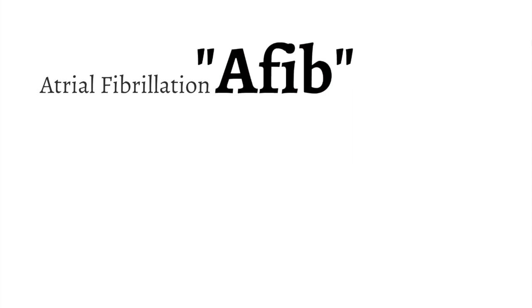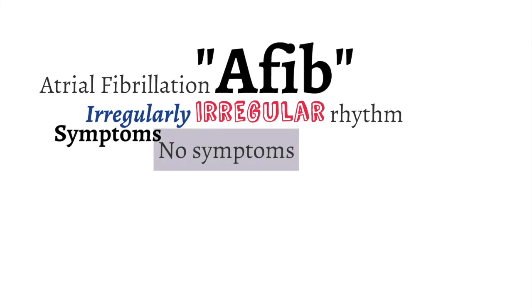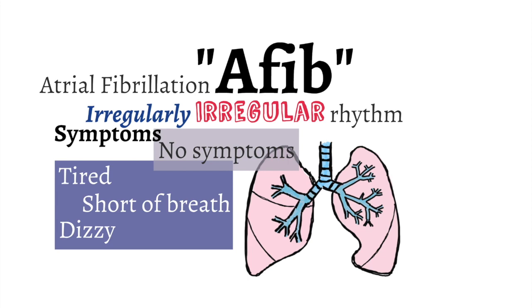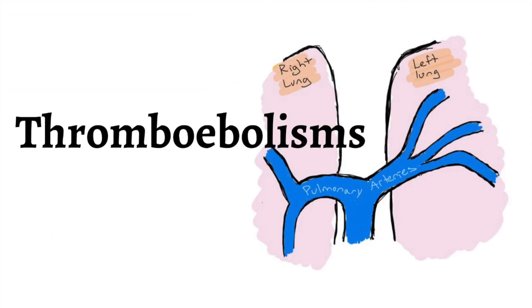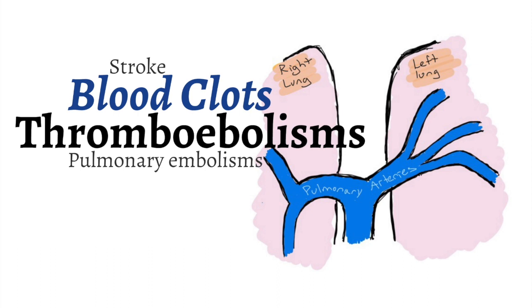Atrial fibrillation, otherwise known as AFib, is an irregular heart rhythm that can cause significant symptoms and lead to major complications. AFib is when there is an irregular pattern to the heartbeat and is described as irregularly irregular. Symptoms vary from no symptoms to feeling tired, dizzy, and short of breath. Most importantly, atrial fibrillation can lead to thromboembolisms, which are blood clots that can result in strokes and clots in the pulmonary blood vessels.